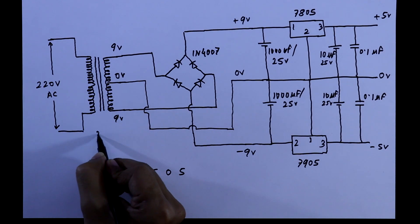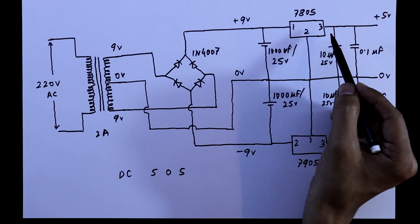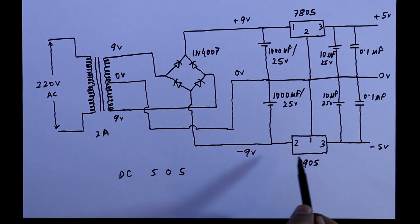It is 9 volt, 2 ampere. Each IC can control up to 1 ampere, so I am using a 2 ampere transformer because we have two ICs. Now we will make this circuit in PCB.